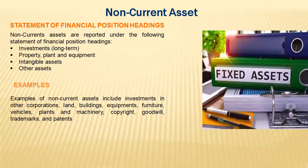Examples of non-current assets include: investments in another corporation, such as buying stocks or shares in a bank; land, which normally appreciates over time; buildings, equipment, furniture, motor vehicles, and plant and machinery. We also have copyright, which is a type of intangible non-current asset, as well as goodwill, patent rights, and trademarks — all intangible non-current assets that cannot be seen but add value to the organization.